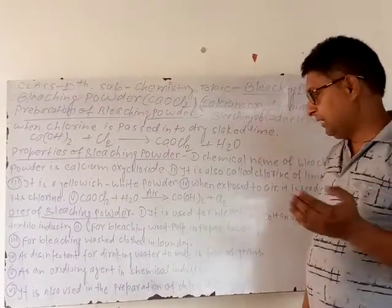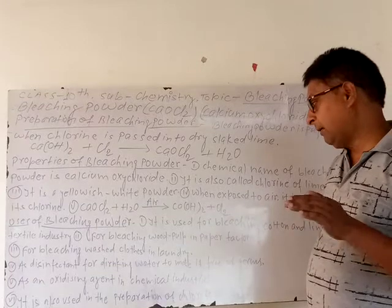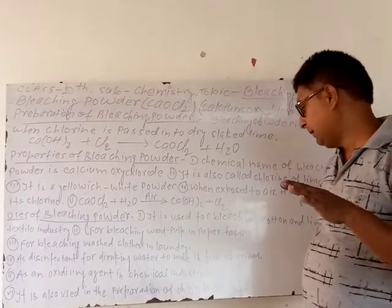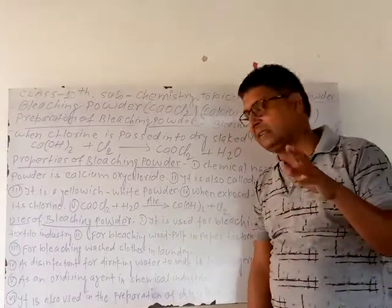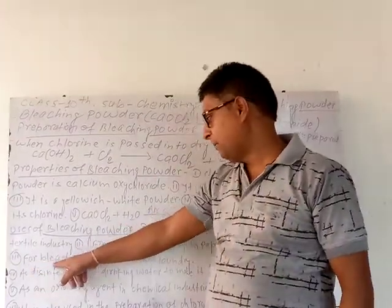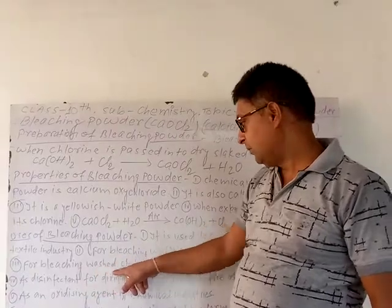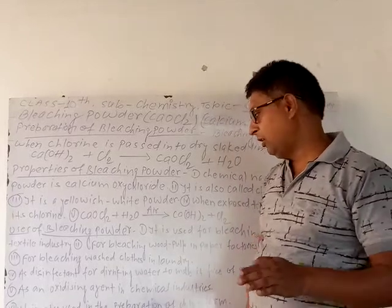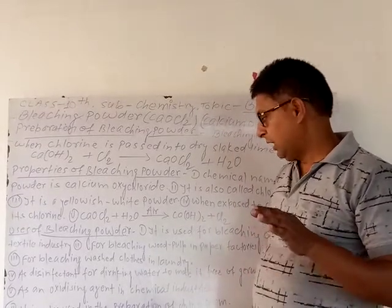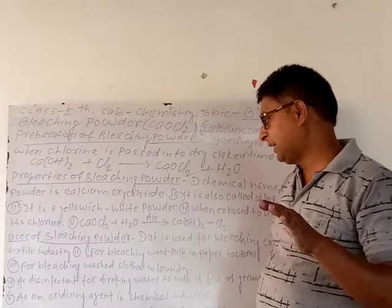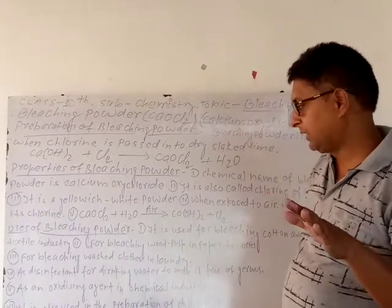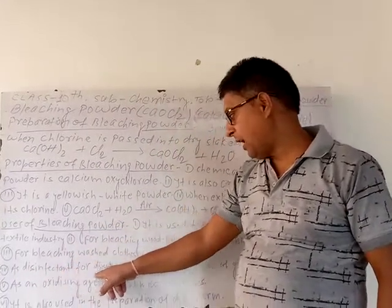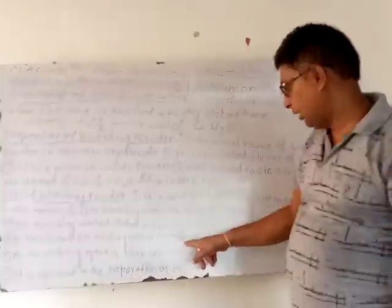Next point: it is used for bleaching wood pulp in paper factories. Next point: it is used for bleaching washed cloth in the laundry — Bleaching Powder is used in laundries for bleaching clothes.